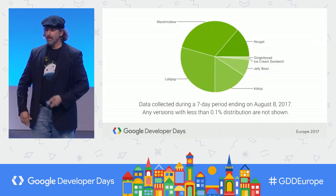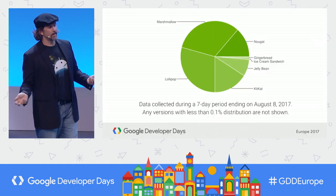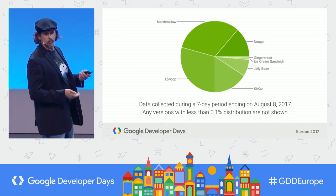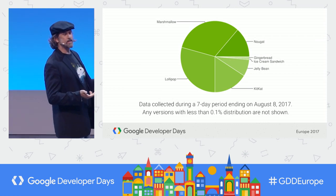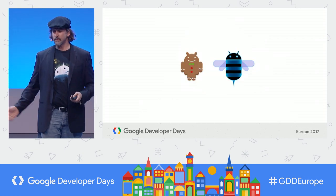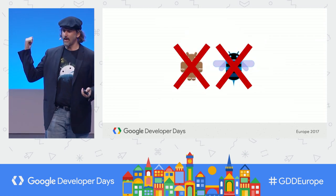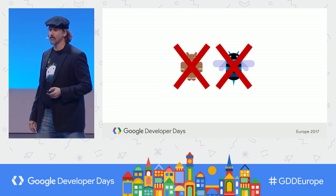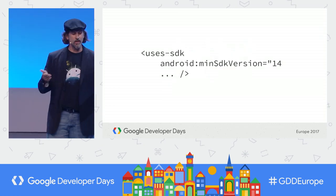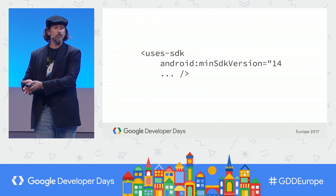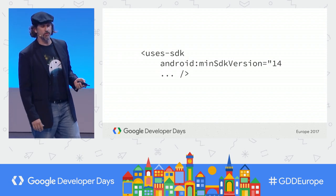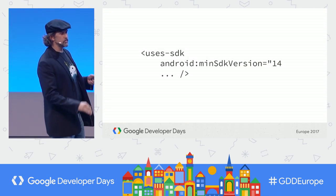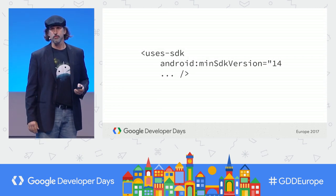Let's get into the support library. Devices running SDKs less than 14 comprise less than 1% of Play Store active users. So we've updated the support library's minimum SDK level. We got rid of those older targets and will be focusing on the SDK versions most developers are actually targeting. The minimum version is now 14. Google Play Services also recently dropped that support in version 10.2. You can still use an older version of the support library if you really want to still target Gingerbread.